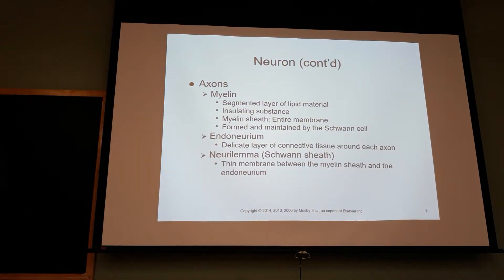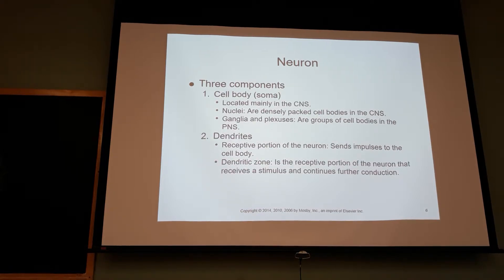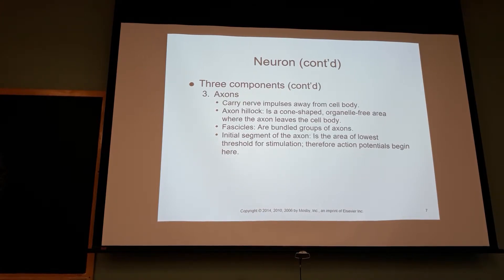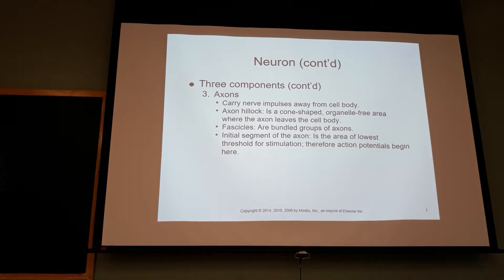So your three parts: your soma, which is the cell body; you have the dendrites, which are the receptive parts — those little tentacles — the dendritic zones, the receptive portions of the neuron; and then you have the axons, which carry nerve impulses away from the cell body. I process information in the cell body and send it down the axon to transmit it to another cell body.